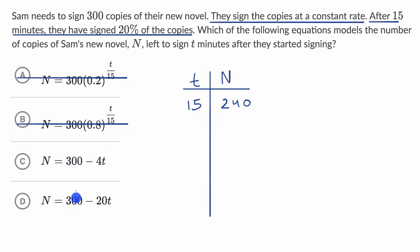So let's see which of these choices is consistent with that. So 300 minus 4 times 15. Let's see, 300 minus 4 times 15. That does indeed look like 240. So this one's looking good.